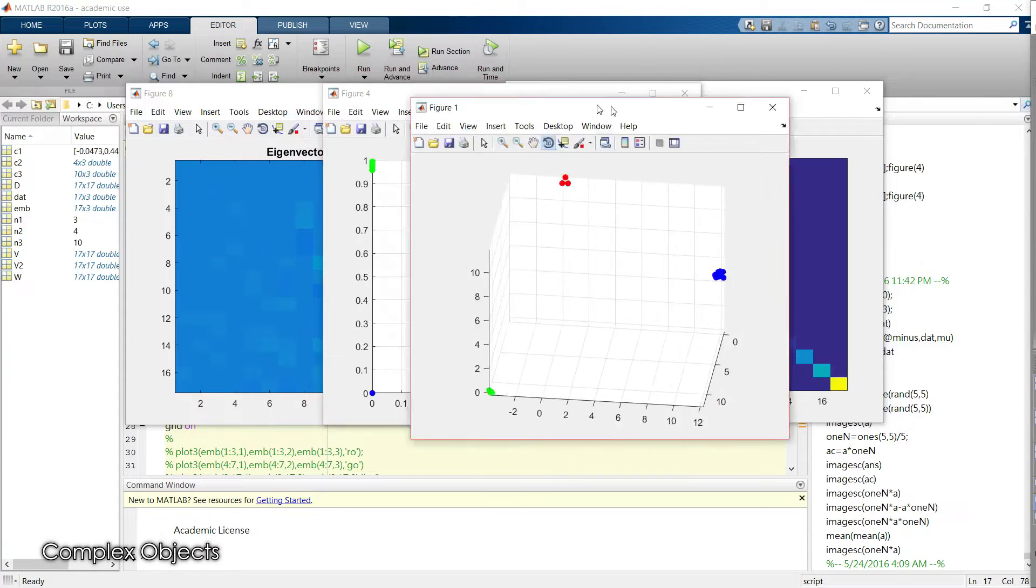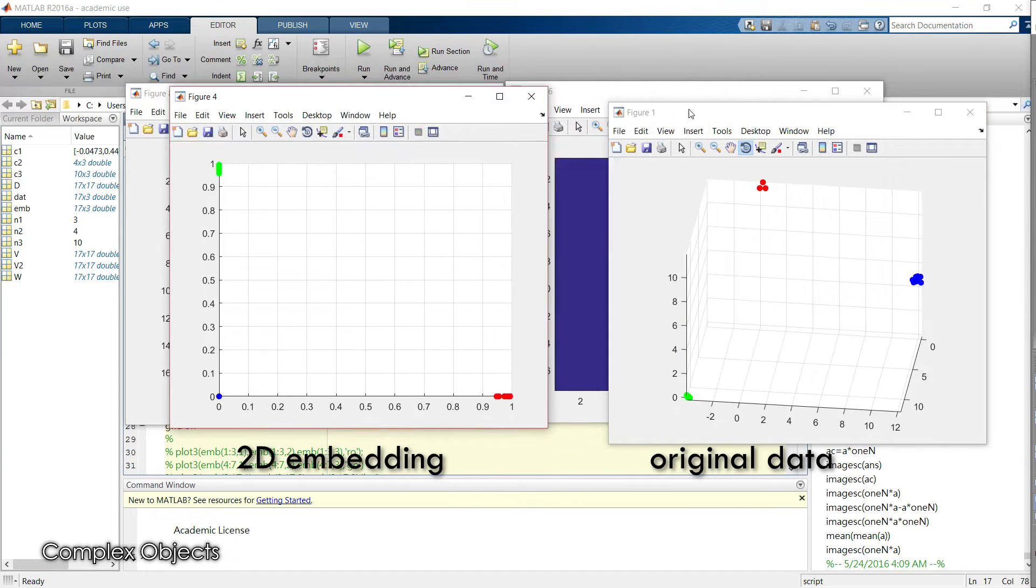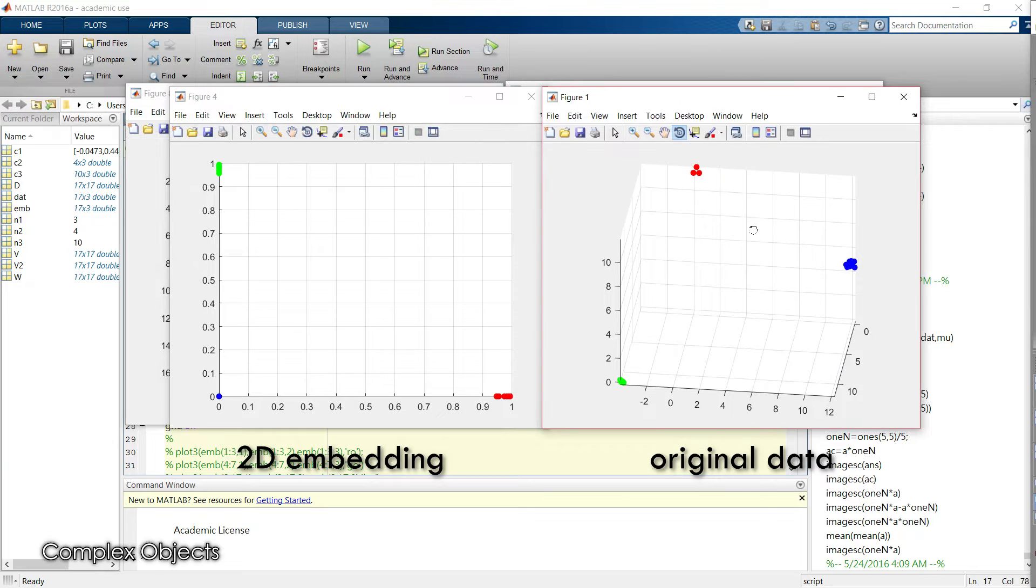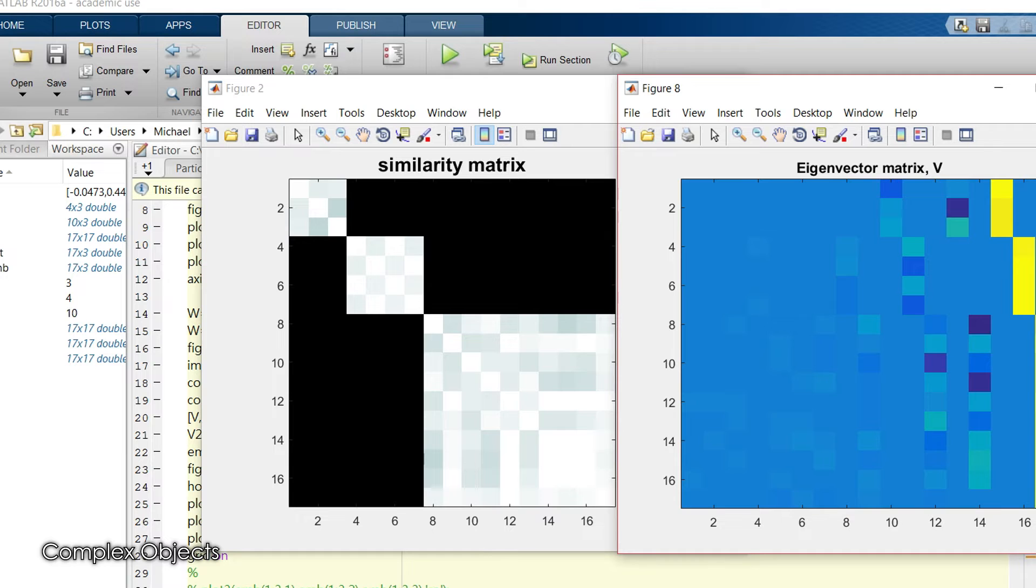This is good because we wanted to preserve something about the relationship that existed in the three-dimensional space. You can see there's kind of these three groups. At this point you might be wondering how did this happen—how did we get this really nice 2D representation from these eigenvectors?